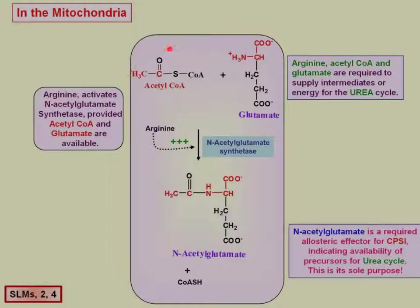Acetyl-CoA is a signal saying this cell has enough energy, and glutamate is saying this cell has excess nitrogen. Arginine is an activator for N-acetylglutamate synthetase, indicating that the urea cycle is ready to go. So we form N-acetylglutamate.